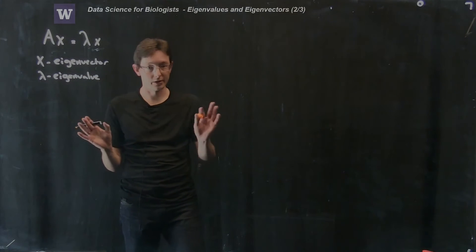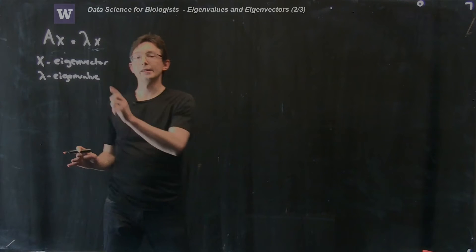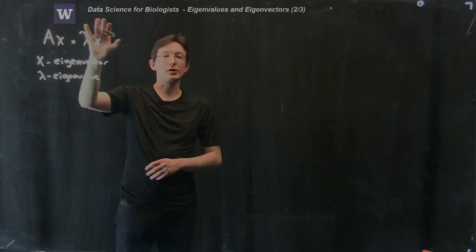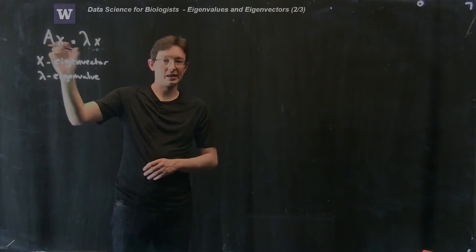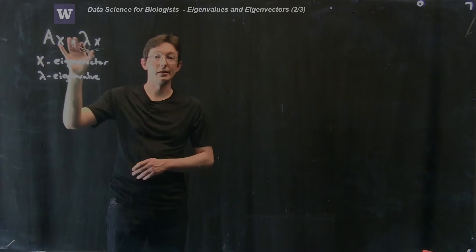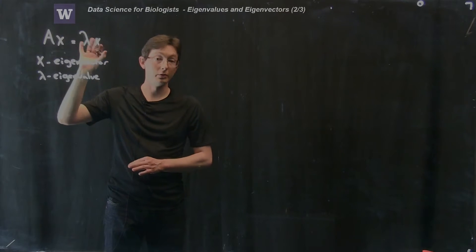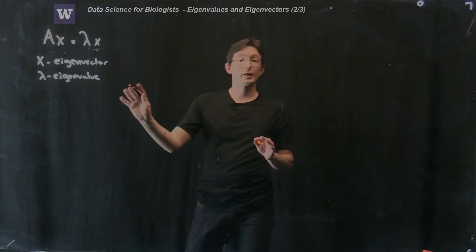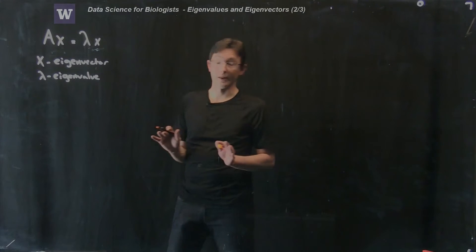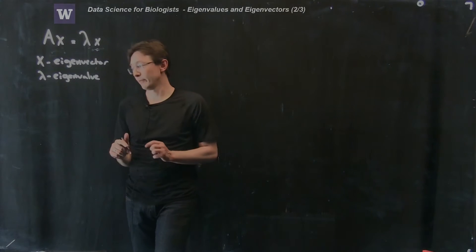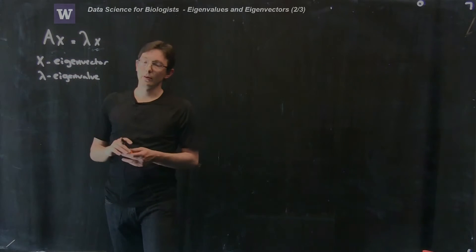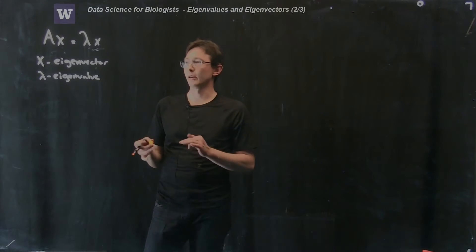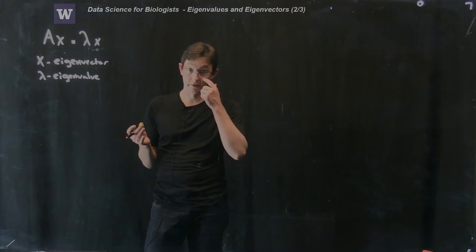Most vectors don't satisfy this property. So now what we're going to do is actually determine how you would solve for these special x's and special lambdas if I gave you a new matrix A. For a matrix A, how do you actually solve for these eigenvectors and eigenvalues? The first step is just some matrix algebra — we're going to solve a system of equations.